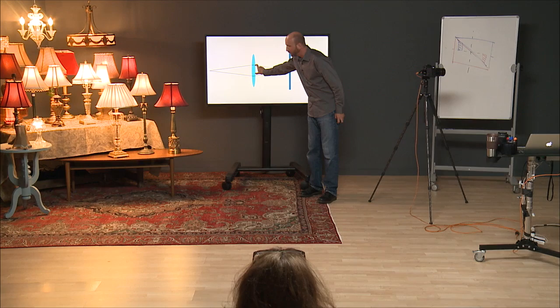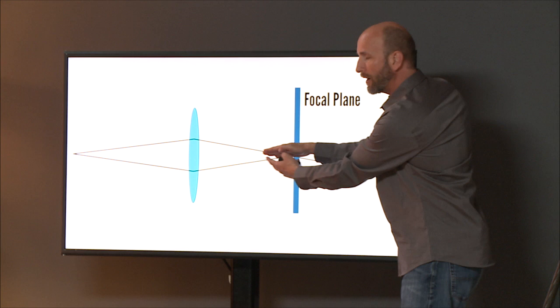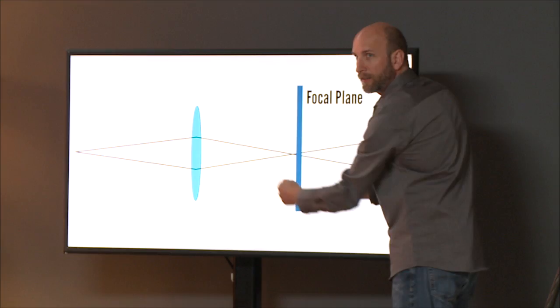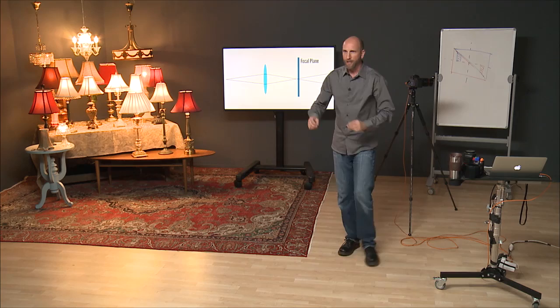And if we have something like this, where we close the aperture down, what happens is these converge in a much more narrow way, which means our circle of confusion gets greater and our depth of field grows.